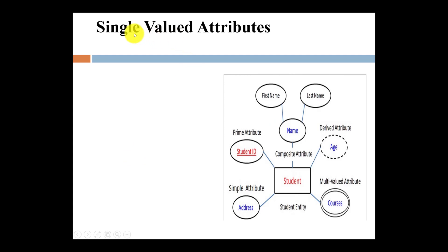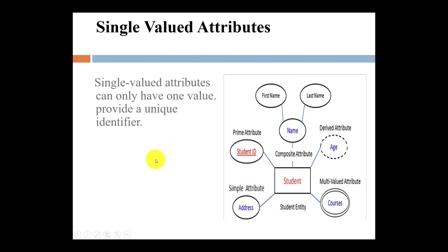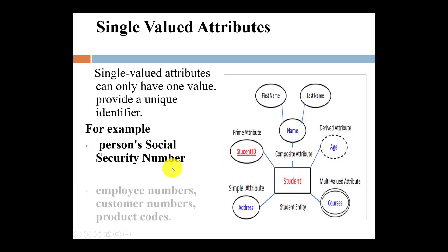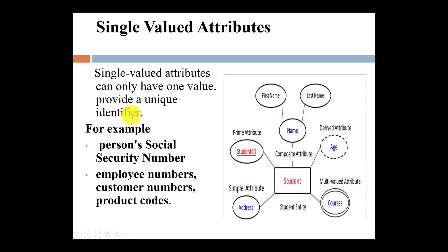Now what is a single value attribute? A single value attribute holds only one value — it provides a unique identifier or prime attribute. For example, student ID holds only one single value, which is why it is called a single value attribute. Other examples include social security number, employee number, customer number, and product code. Each of these holds only one single value, which is why they are called single value attributes.